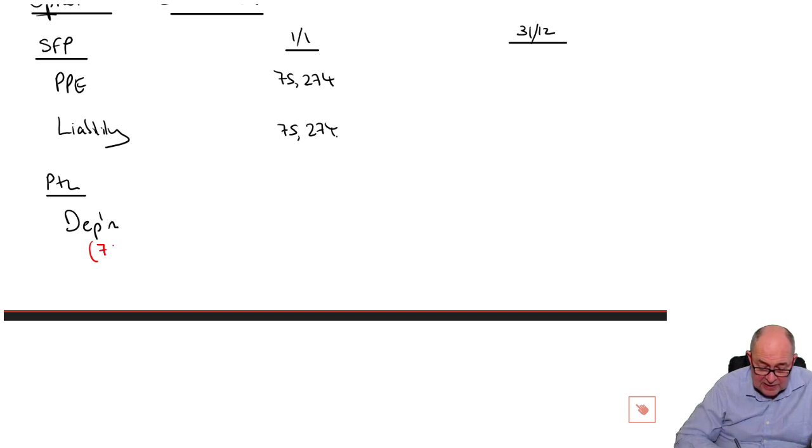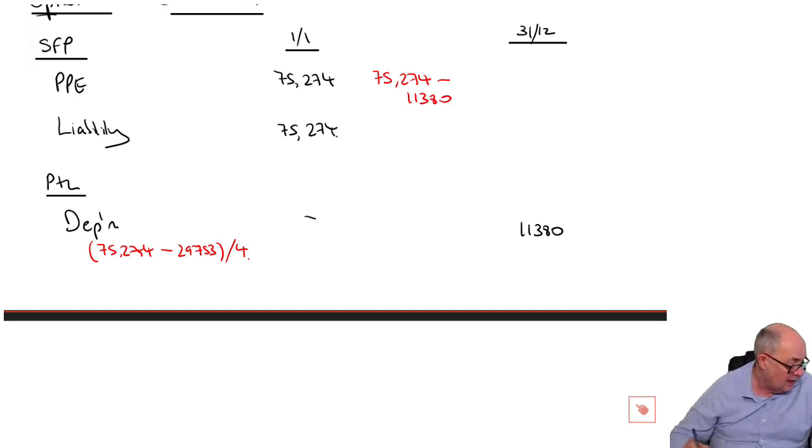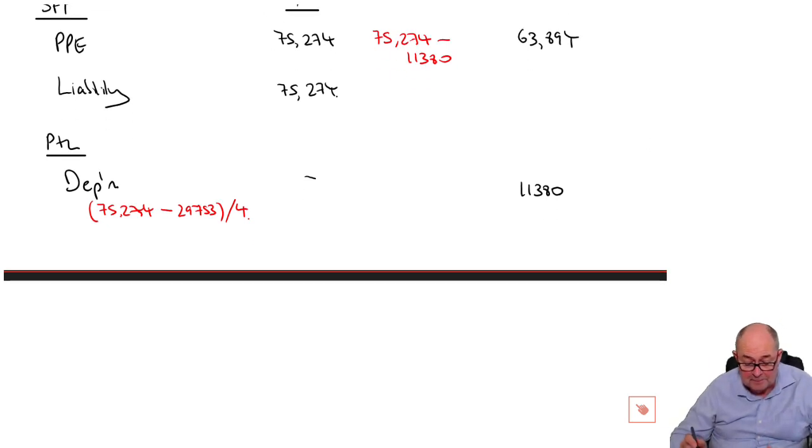Remember residual value. 75,274 minus residual value at the end of the life, which is 29,753, all over 4. That would give me depreciation of 11,380. We mustn't get things like residual value wrong. Because that's back to your basics of bookkeeping. On the carrying amount of the asset, it's gone down. 75,274 minus the first year's depreciation of 11,380. That must be 63,894.